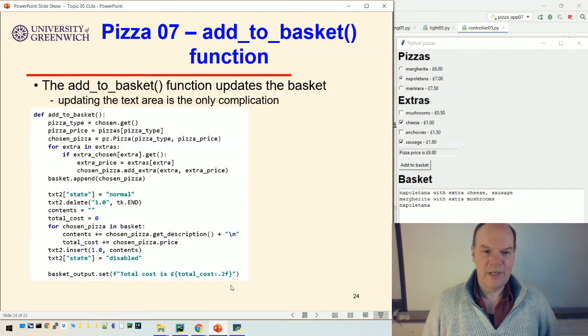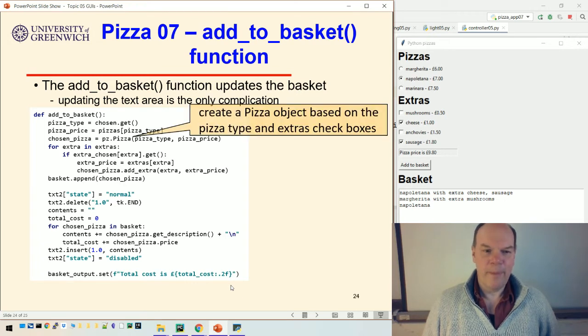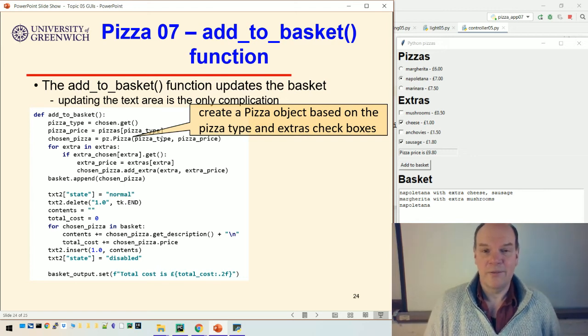The other function is just the add to basket function. It does a similar thing, but this time it creates a pizza object. So this is like what we saw last week when we created lots of random pizza objects and put them in a list. We create a pizza object, we add the extras to the pizza and then we put the pizza. So this chosen pizza there is the pizza object created from the pizza type and the pizza price. We add the extras to the chosen pizza.